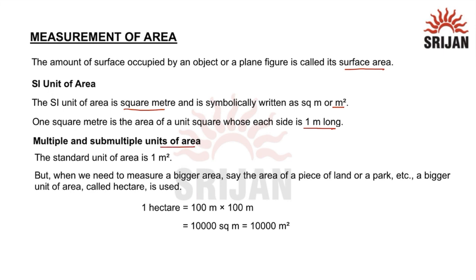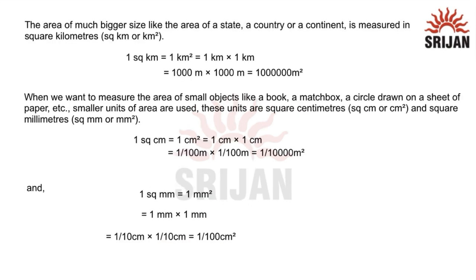Now the multiples and sub-multiples unit of area: as we know, the standard unit of area is one meter square, but for larger areas like land or a park, the unit hectare is used. One hectare is equal to 100 meters multiplied by 100 meters, that is 10,000 square meters.